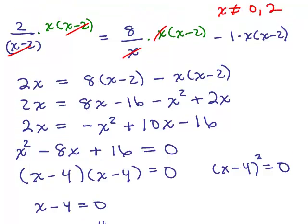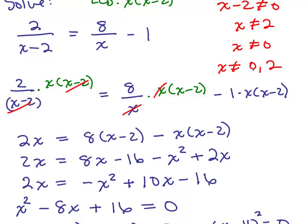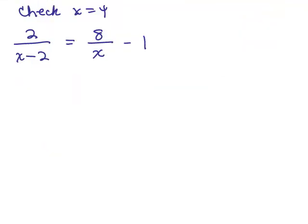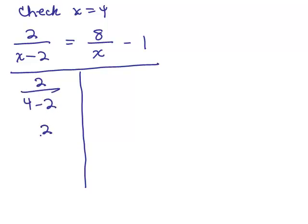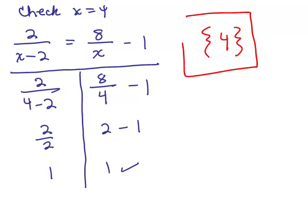First we want to make sure x equals 4 doesn't give a 0 in the denominator. Looking back at the original, x can't be 0 or 2 — those are the two numbers that would give a 0 in the denominator. So we plug 4 into the original equation to check. On the left side: 2 over 4 minus 2 is 2 over 2, which equals 1. On the right side: 8 over 4 minus 1 — 8 divided by 4 is 2, so 2 minus 1 is 1. It checks, so the solution is x equals 4.